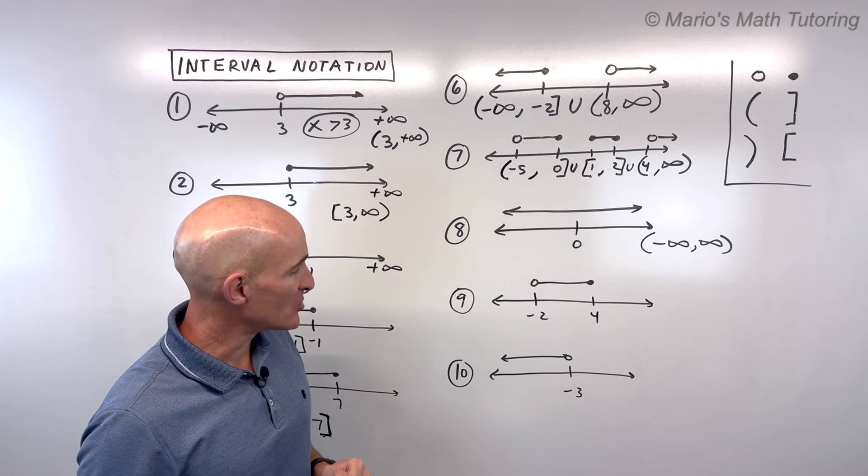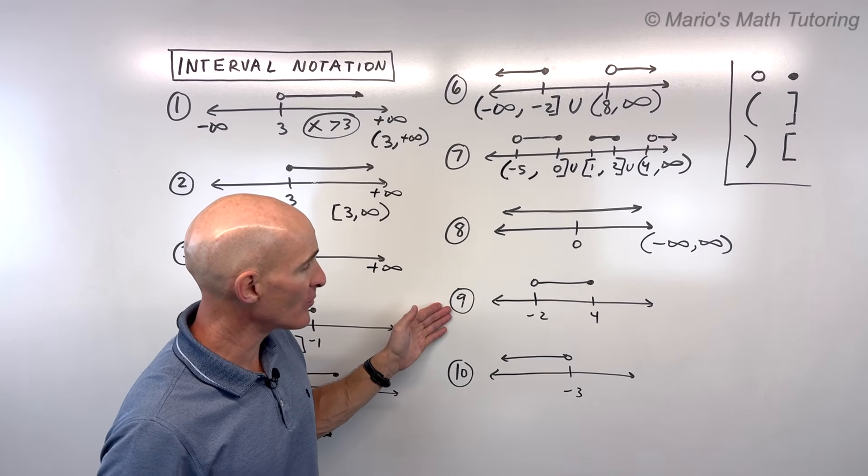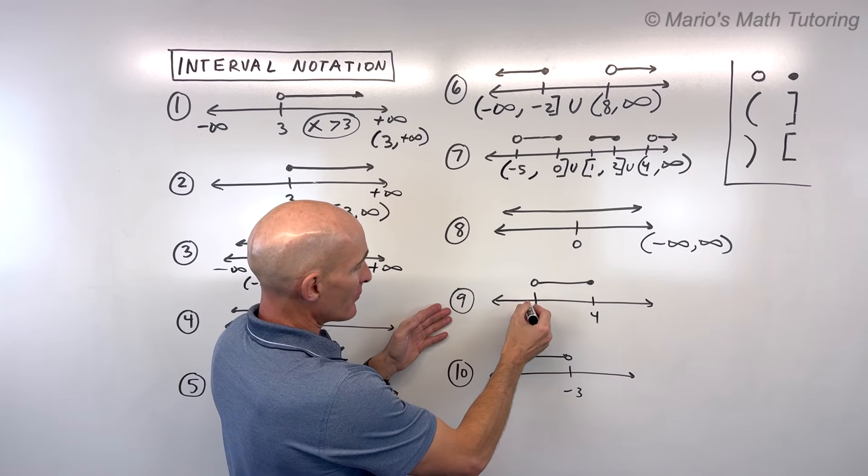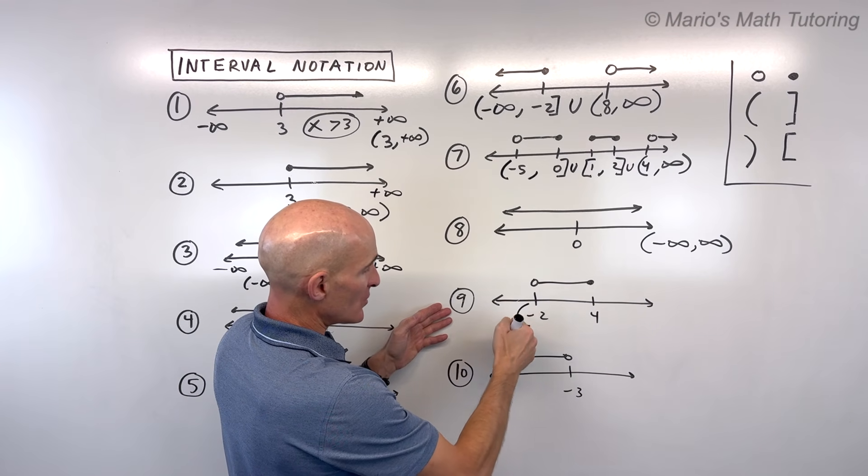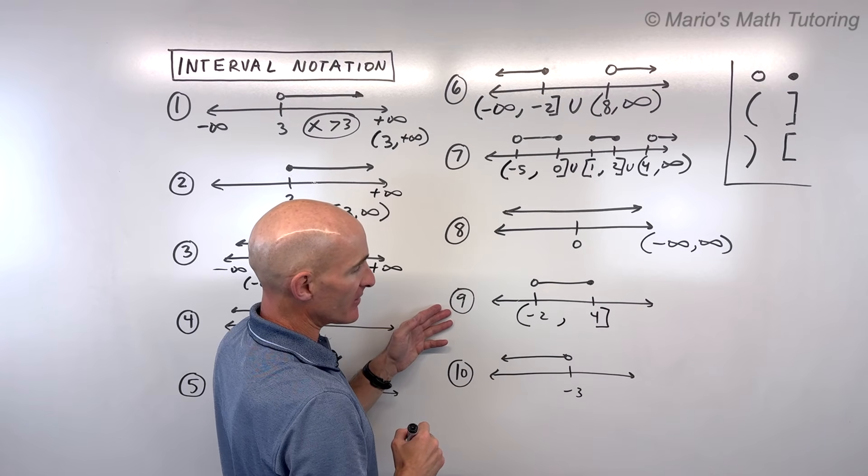Number 9 and 10, why don't you try these on your own? See if you can pause the video and see what you get for 9 and 10. If I was doing number 9, I'm going from negative 2, not including negative 2, so we want to use a parenthesis, comma, to 4, including 4, square bracket.